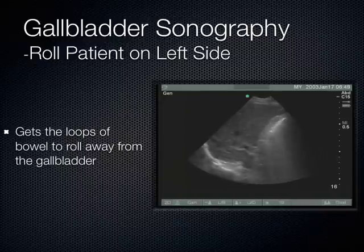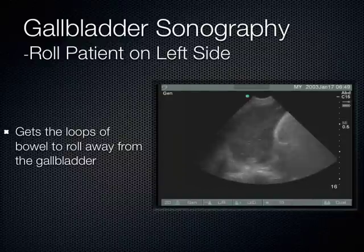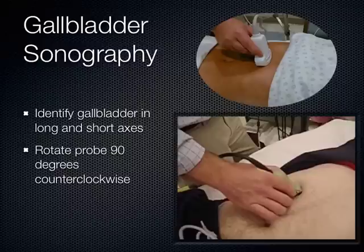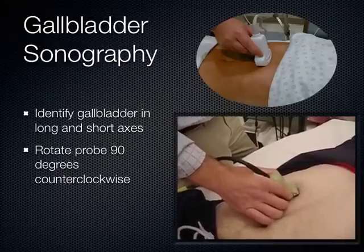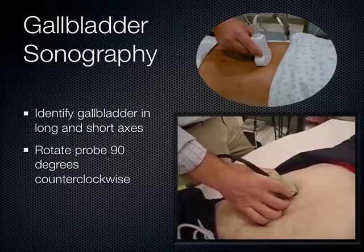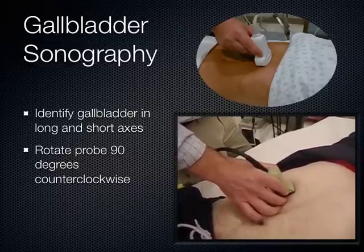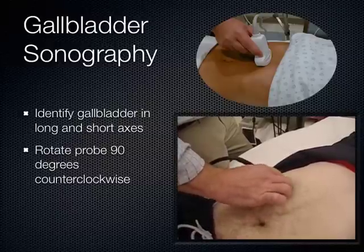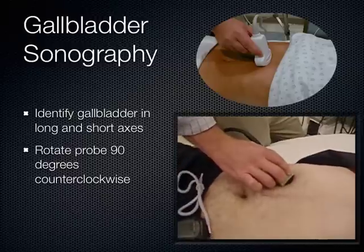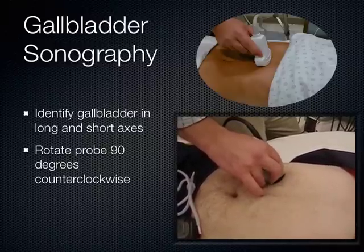A prior ultrasound fellow of mine named Will Scruggs has made it his life's work with ultrasound of the gallbladder, and he captured a video showing his scanning technique. Once you locate the gallbladder in the long axis, you also need to view it in the short axis. Once you get the gallbladder in the long axis, you fan through the gallbladder making sure you catch the entire gallbladder looking for any type of pathology. After you're done with the long axis, you rotate the probe 90 degrees and view the gallbladder in the short axis, again fanning through the entirety of the gallbladder looking for any possible pathology.